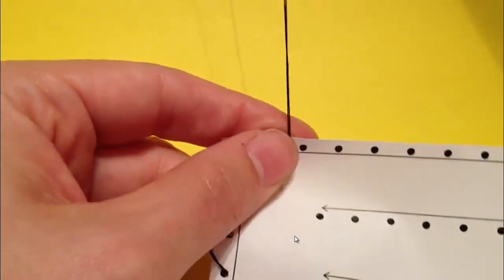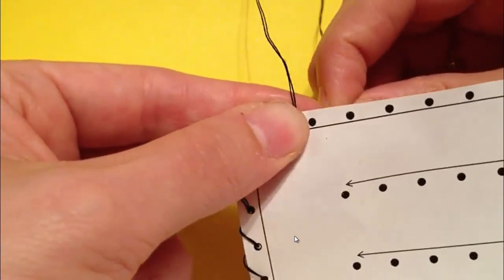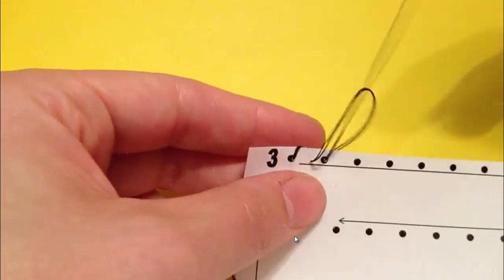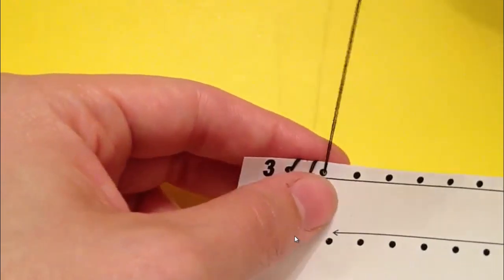It doesn't have to be perfect, but you're going to try to aim for that, and then we're going to go on to the next dot. Same exact way, you go over the edge of the paper, come up through the bottom.